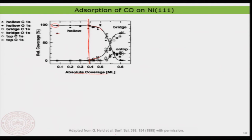This is a systematic analysis. As coverage increases to around 0.55–0.65 monolayer, the top site occupation starts increasing and the HCP sites go down. When coverage reaches about 0.6 monolayer, there is no occupation of the HCP site — most molecules are occupying either the bridge site or the on-top site. You can systematically understand what is going on at the interface as a function of coverage.